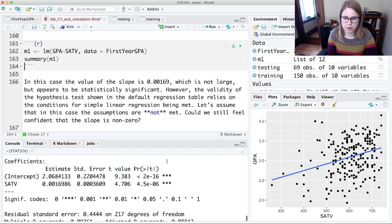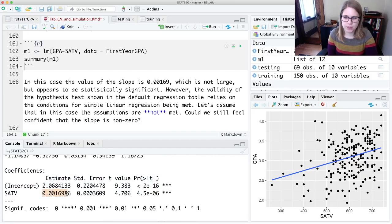And the slope is 0.00169. That's a small number, but it's statistically significant according to the regression table.